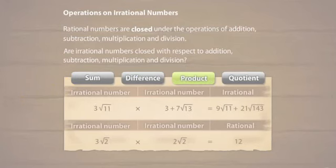It can be concluded from these examples that when two irrational numbers are multiplied, the product may or may not be an irrational number.